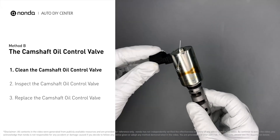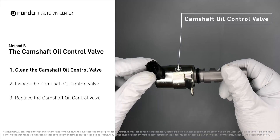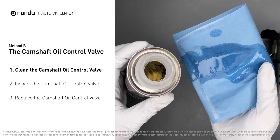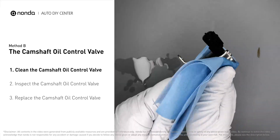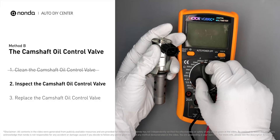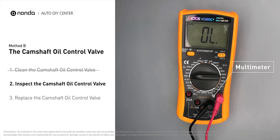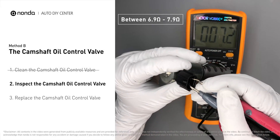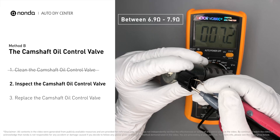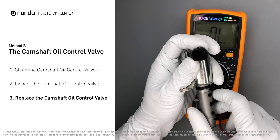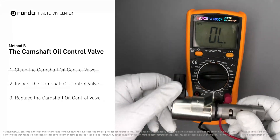Method B: the camshaft oil control valve. Carefully remove the camshaft oil control valve from the engine. Use a valve cleaner to clean it, then use a multimeter to test the valve. At an ambient temperature of 68°F, the valve resistance should be between 6.9 and 7.9 ohms. If you do not get a reading, the camshaft oil control valve is faulty and needs to be replaced.